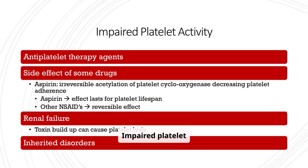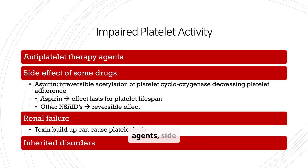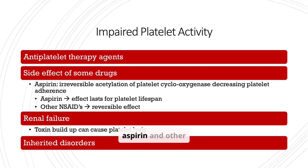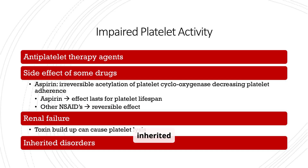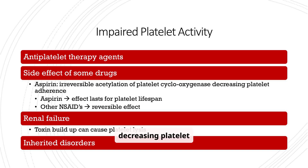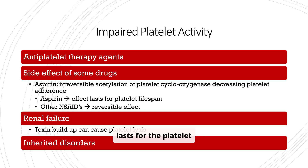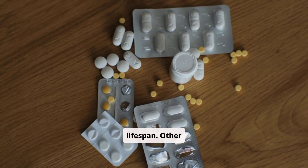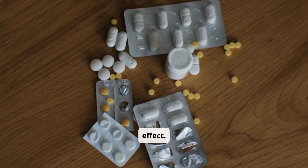Impaired platelet activity can be caused by antiplatelet therapy agents, side effects of some drugs like aspirin and other NSAIDs, renal failure, and inherited disorders. Aspirin causes irreversible acetylation of platelet cyclooxygenase, decreasing platelet adherence, and its effect lasts for the platelet lifespan. Other NSAIDs have a reversible effect.